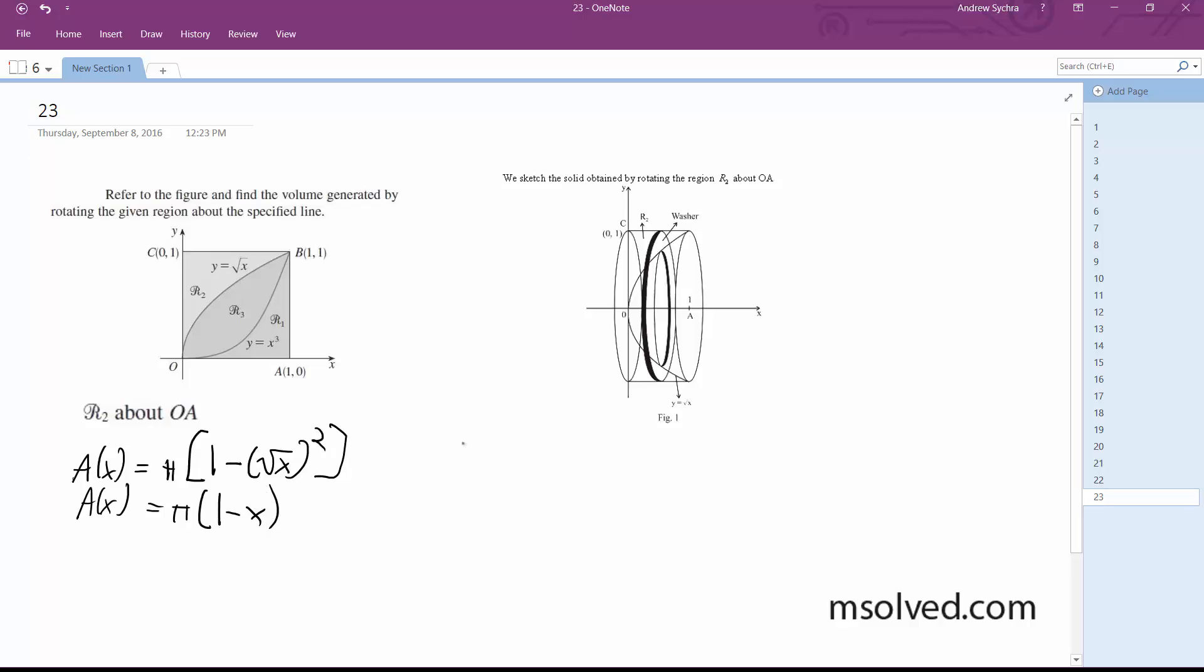Alright, so when we do this, the volume is going to be equal to from 0 to 1, pi(1 minus x) dx.